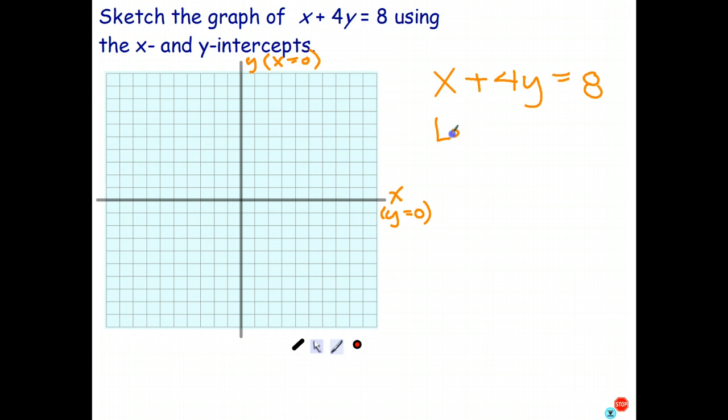So we're going to start by saying let y equals 0 and find out where it crosses the x-axis. Well, this is even easier than the previous one. All of that goes to 0. 4 times 0 is 0. x plus 0 is x. And there's the answer without solving any calculations at all. That's where it crosses the x-axis.